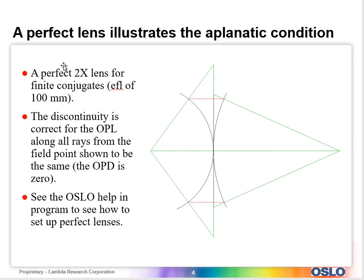So a perfect 2x lens for finite conjugates, this is the effective focal length of 100 millimeter case that I just showed. That's in our demo files. This discontinuity occurs because if you actually aim at the sphere, I've shown a sphere that relates to the beam on the left, the object beam, and then the beam on the right, the image beam.